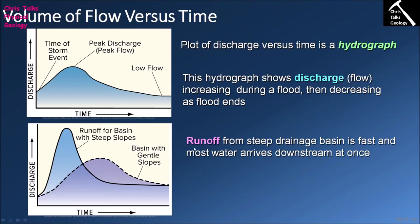Most of what affects river discharge is runoff — water moving across the surface of the Earth. The more runoff that goes into your river, the faster discharge will increase. In an environment with steep slopes, water moves into the river very fast because the steep gradient naturally encourages water to drop quickly, giving it quite a high velocity.